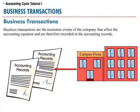Not all events are recorded in the accounting record. An event is only recorded if it affects the components of the accounting equation. This type of event is called a business transaction. Business transactions are the economic events of the company that affect the accounting equation and are therefore recorded in the accounting records.